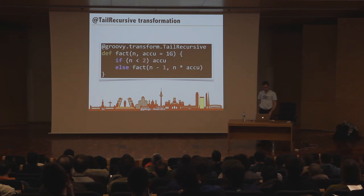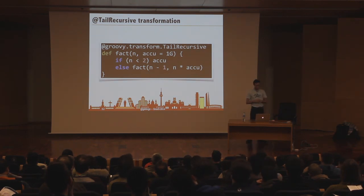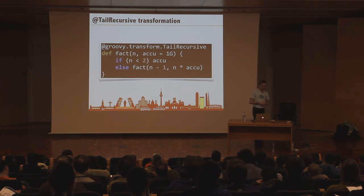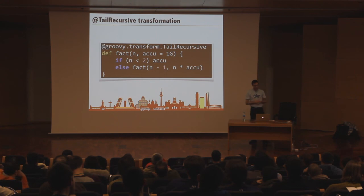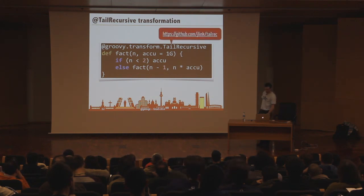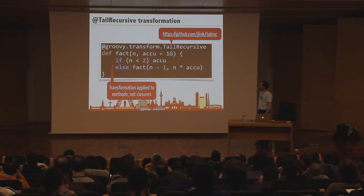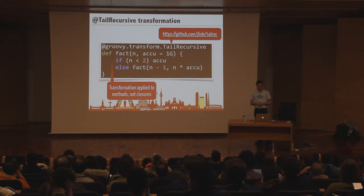We have another transformation: @TailRecursive. The JVM doesn't natively support tail call optimization, but for methods that are tail-recursive — where the recursive self-call is the very last step — this transformation avoids deep stack frames by converting the recursion into a loop. It was contributed by Johannes Link. Note it applies to methods; for closures, there's already the trampoline() method for the same purpose.